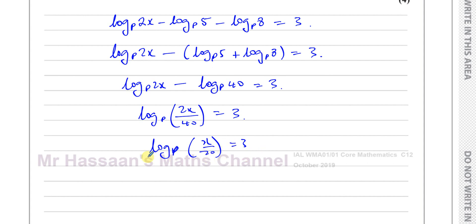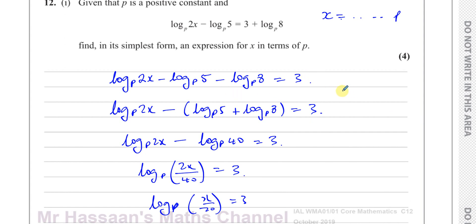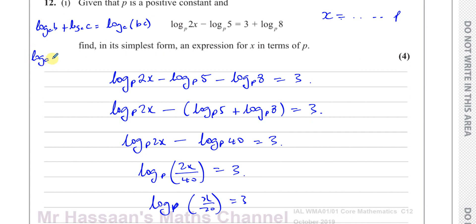Now we're ready to rewrite it without the log. We used the law: log base A of B plus log base A of C equals log base A of BC. And log base A of B minus log base A of C equals log base A of B over C. I combined terms using the multiplication law and the division law.